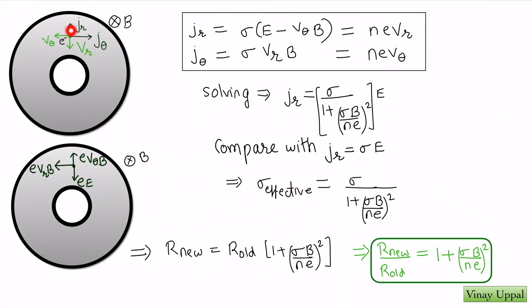Because the current is traveling radially outwards, the electrons will have a radially inward velocity. As we saw in the previous part, the electrons will also acquire, because of the magnetic field, an anti-clockwise velocity. Taking the cross product with the magnetic field and accounting for the electron's negative charge, you will have a tangential force of eVrB and a radially outward force of eVθB, plus the usual electric force because there is an electric field from the inner surface to the outer surface.